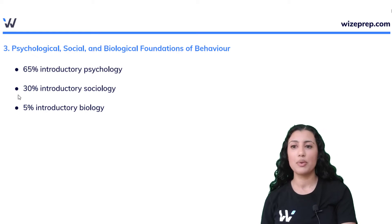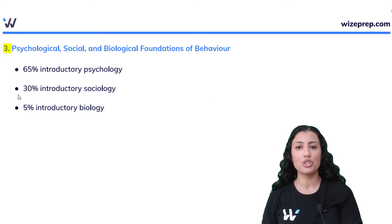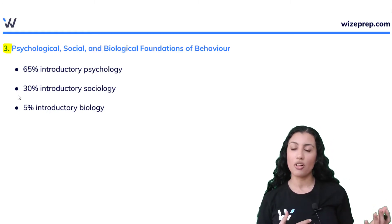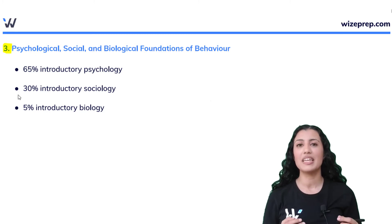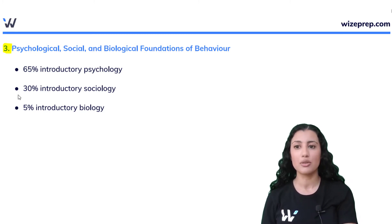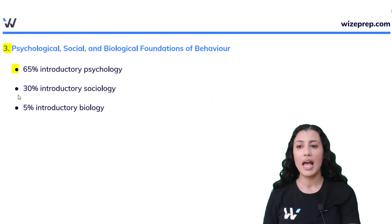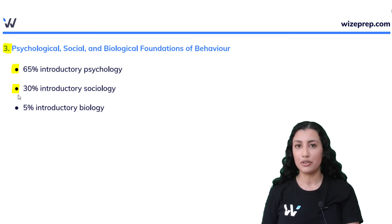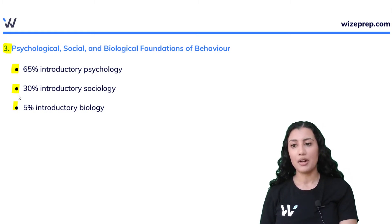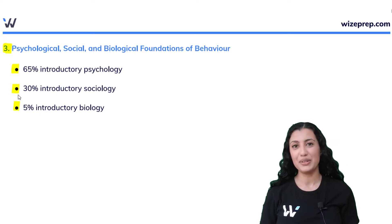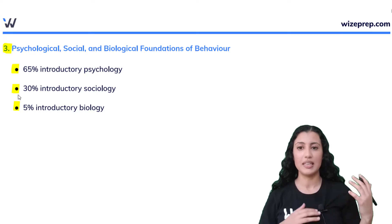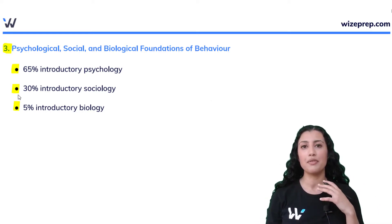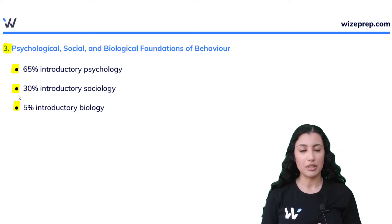The next section is psychological, social, and biological foundations of behavior. A lot of people refer to this as psychology and sociology, since those are the main components. It's made up of 65% introductory psychology and 30% introductory sociology. Biology shows up here too — this is the third section biology has appeared in — at just 5%, showing psychology's connection to biology in some passages.